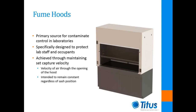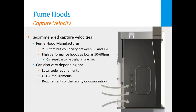The primary source of contaminant control in labs are fume hoods. These are devices specifically designed to provide protection to the lab staff and occupants from the fumes, vapors, and particles generated by the operations being performed within the lab. Fume hoods keep contaminants contained using air that is being pulled through the face of the hood. A common criteria established to contain the contaminants is capture velocity — the average velocity across the main opening of the hood — which is intended to remain constant even as the sash position is adjusted. Maintaining this velocity is crucial to maintain effective contaminant control.